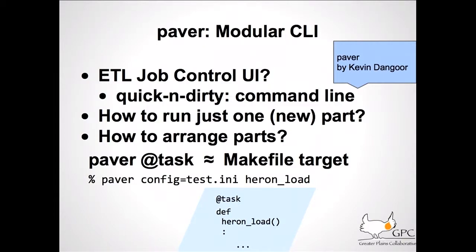You get this big SQL script driven by Python, it runs and takes a long time. Maybe it runs all the way to the end, or maybe it doesn't and you've got to debug. Or maybe it's working great and you want to add something. It turns out you want to break this thing into chunks. As a long-time Unix guy, the command line is good enough for me. The job looked like make to me — you have different make targets and one depends on another. I found a Python package called Paver that has these task things that look a little like makefile targets. You can say 'paver heron_load' and it'll go find that function in your code, and you can give it configuration parameters, a lot like make.